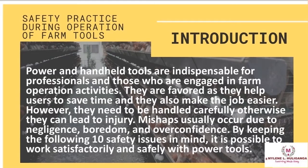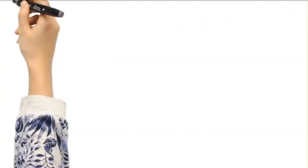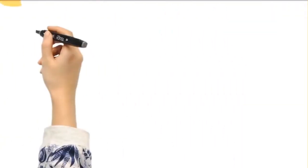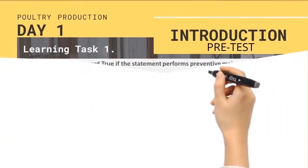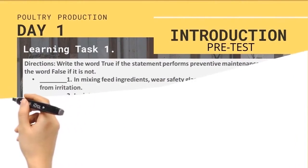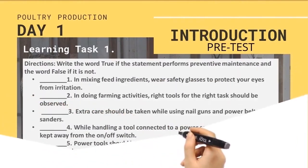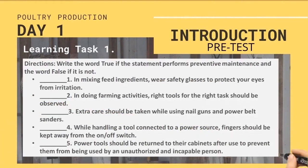Day one — Introduction. Learning Task Number 1: Directions — write the word TRUE if the statement performs preventive maintenance, and the word FALSE if it is not.